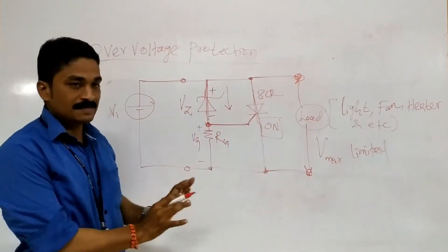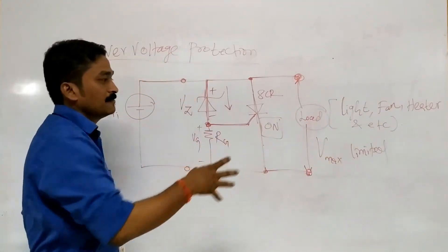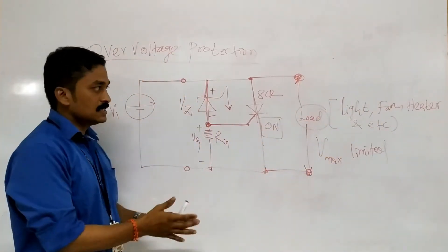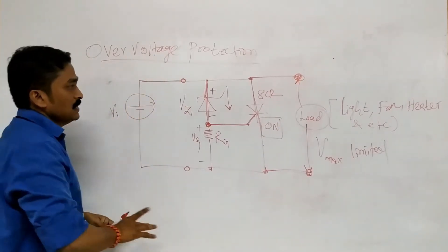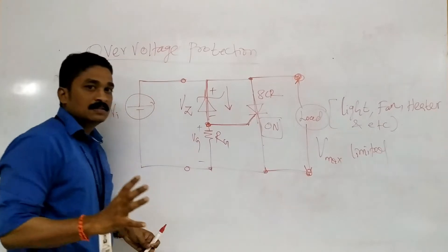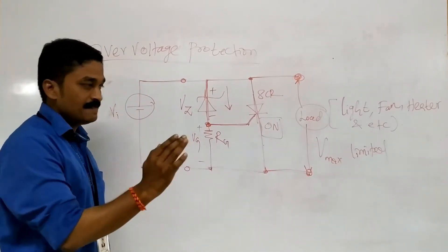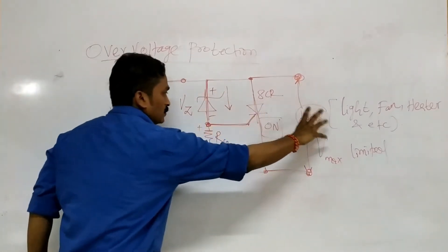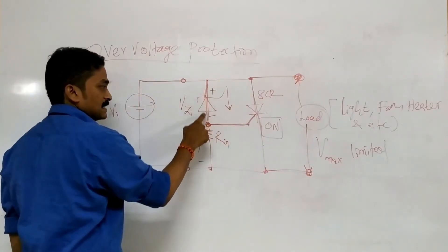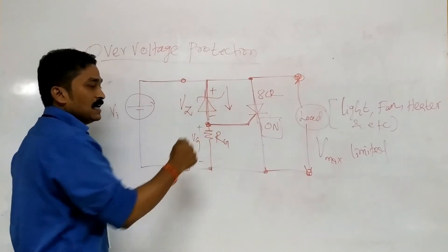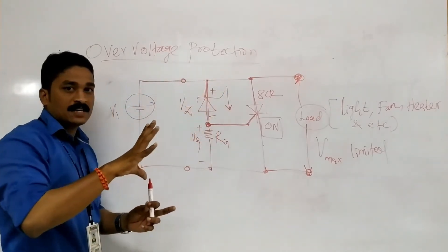This is a very simple circuit to understand. These devices will be protected from over-voltage. In summary: the load has a maximum voltage rating, and according to that we select the Zener diode. Since the Zener diode is in reverse bias, it will only act as a short circuit when a large voltage appears across it.